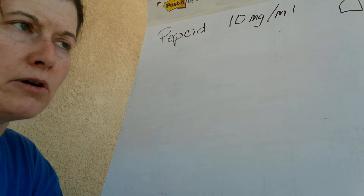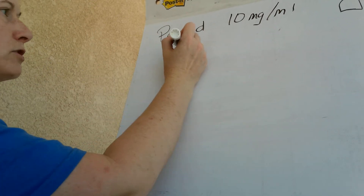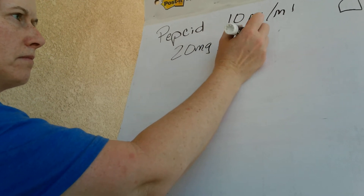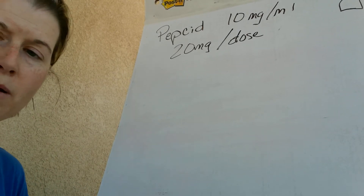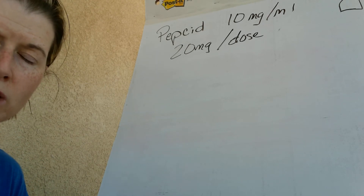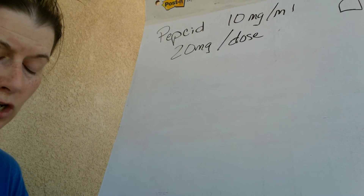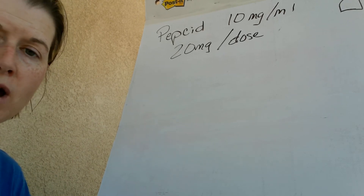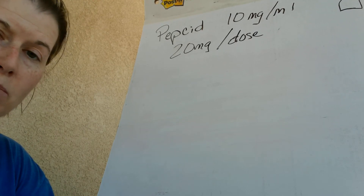Pepcid is a proton pump inhibitor. It comes in 10 milligrams per mL per vial, and generally we give a 20 milligram dose. Now Pepcid has to be diluted — you can dilute it with up to 10 mLs of saline. I generally like to end up with 8 mLs because that's easier to divide into 15-second increments.